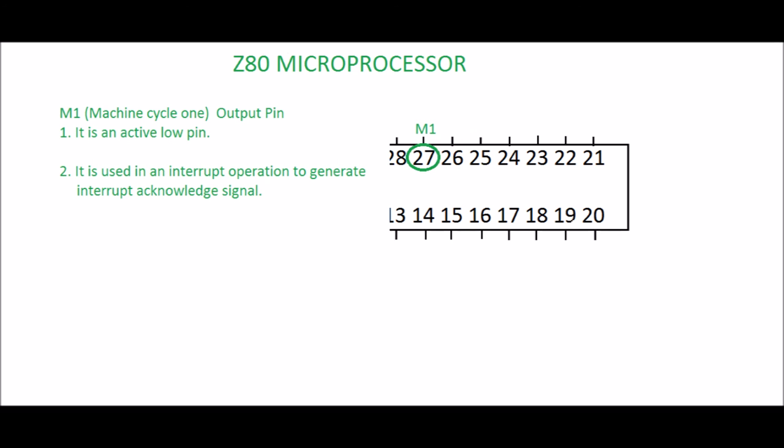Pin 27: M1, Machine Cycle 1. It is an output pin and an active low pin. Active low indicates that an opcode is being fetched from memory. It is also used in an interrupt operation to generate the interrupt acknowledge signal.